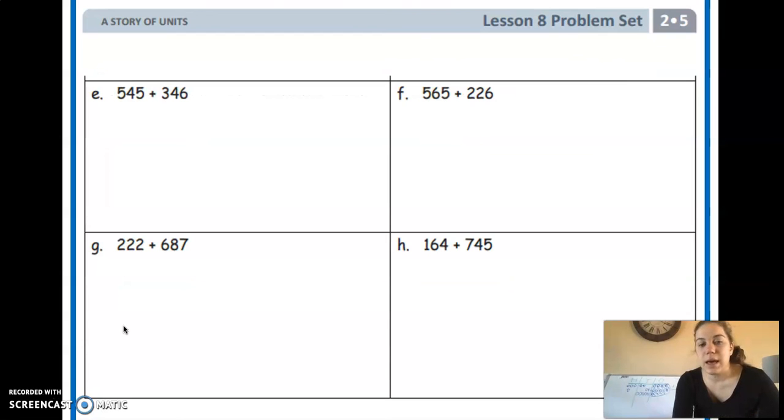And you're going to do the same thing for E, F, G, and H. So 545 plus 346, 565 plus 226, 222 plus 687, and 164 plus 745. Alright, good luck boys and girls. Make sure you send your work to Ms. Flu or I. We're so proud of everything you guys are doing. Keep up the hard work. Bye guys.